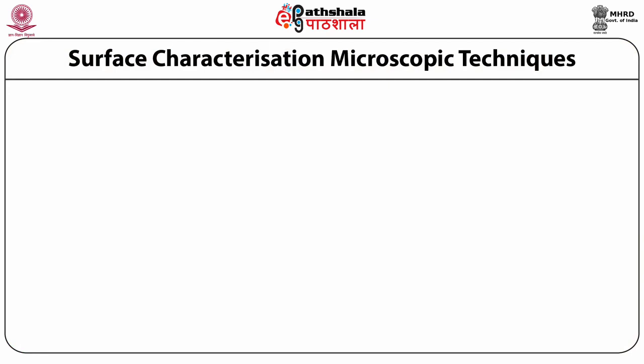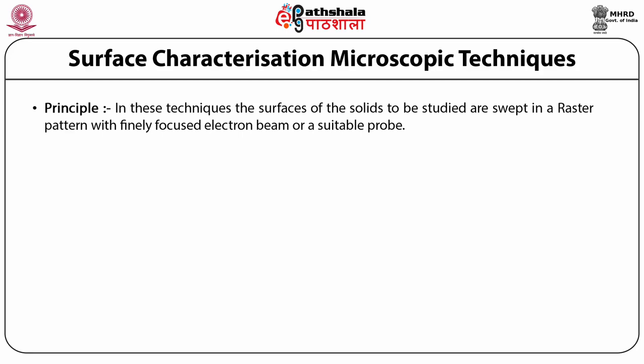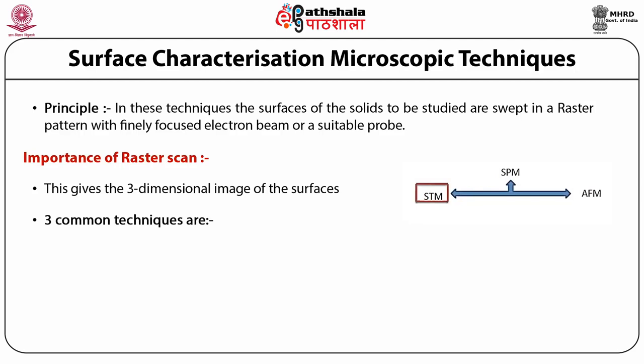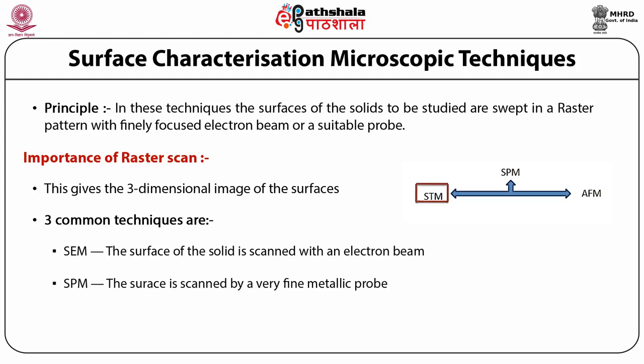Surface characterization microscopic techniques based on STM are there. In these techniques, the surfaces of solids to be studied are swept in a raster pattern with a finely focused electron beam or a stable probe. This gives three-dimensional images of the surface. Three common techniques are: SEM, where the surface of the solid is scanned with an electron beam; and SPM, where the surface is scanned by a very fine metallic probe. SPM is of two types: STM (scanning tunneling microscope) and AFM (atomic force microscope).